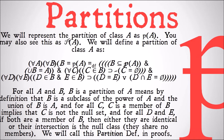We'll represent partitions of a class A as P with a line through it of A. You may also see this as P in script A. We'll define a partition of class A as: for all A and all B, B is identical to the partition of A means, by definition, B is a subclass of the power set of A, and the union of B equals A. Being a subset of the power set of A means that it's made up of subclasses.